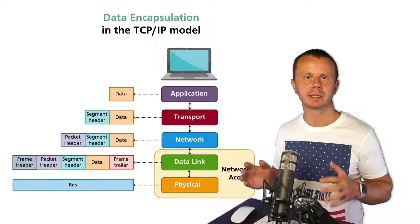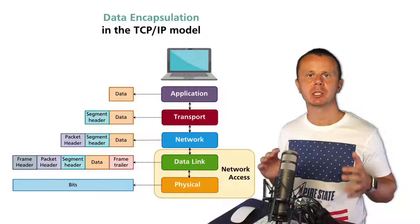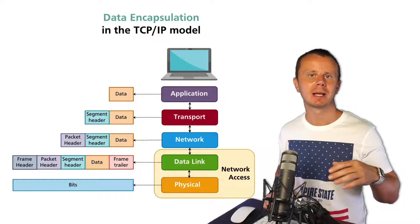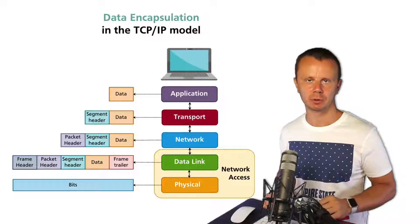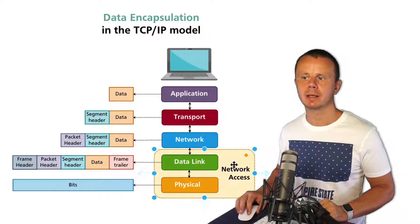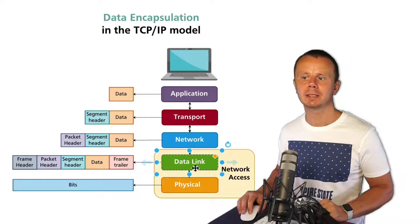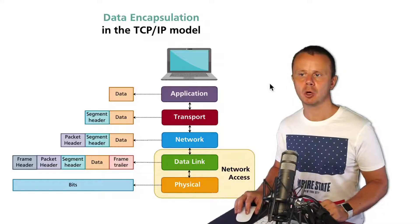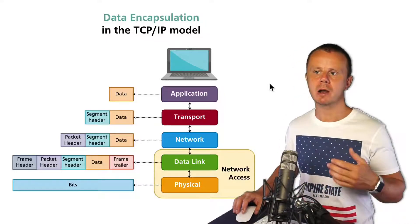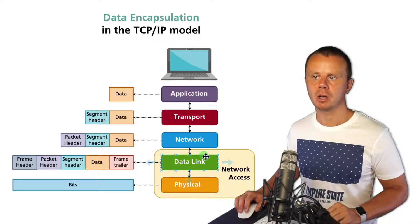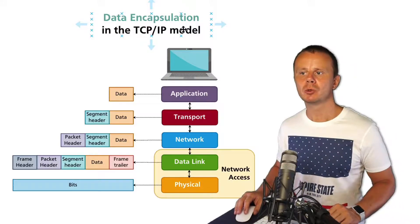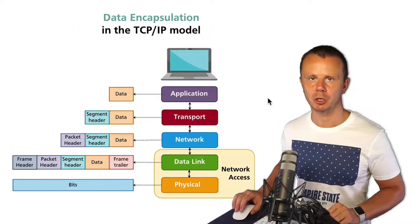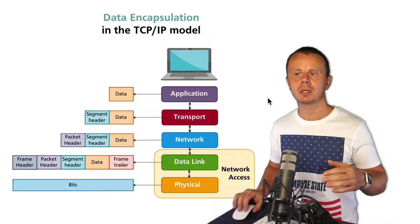We have just compared TCP/IP and OSI models. Sometimes the OSI model is presented as a five-layer model where the network access layer is split into data link and physical layers. Let me show you this five-layer version of the TCP/IP model and use it to explain what data encapsulation is.